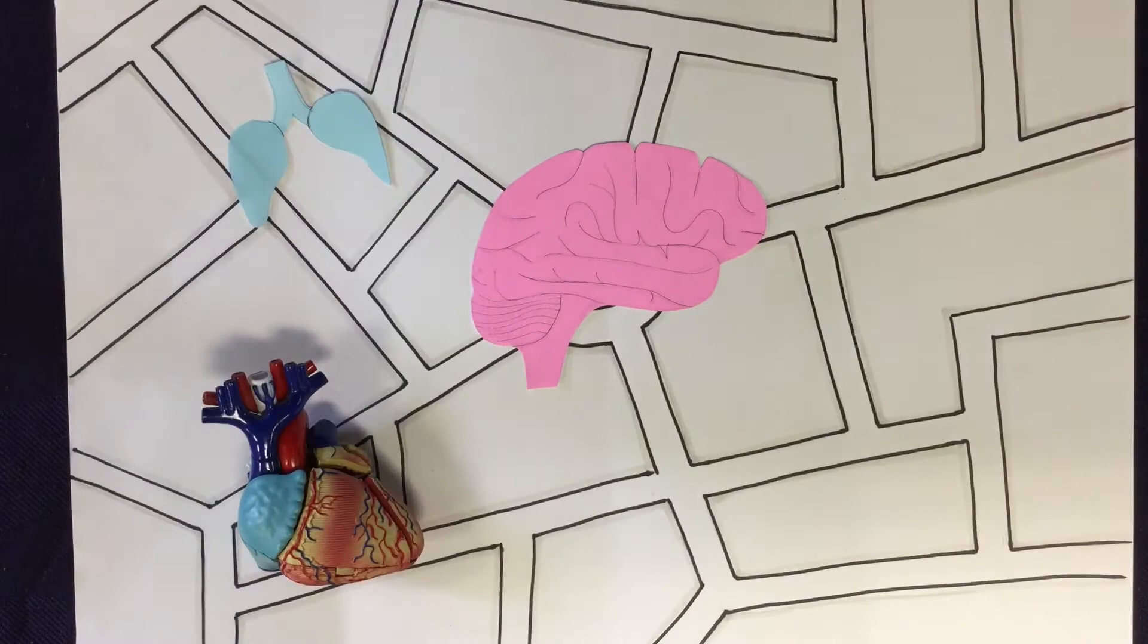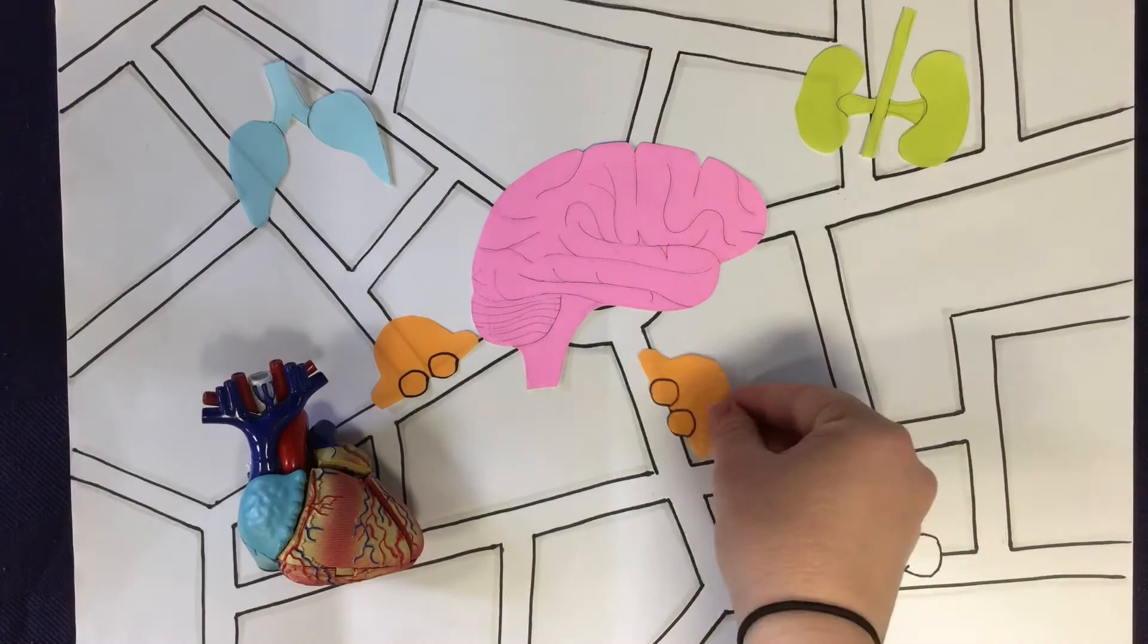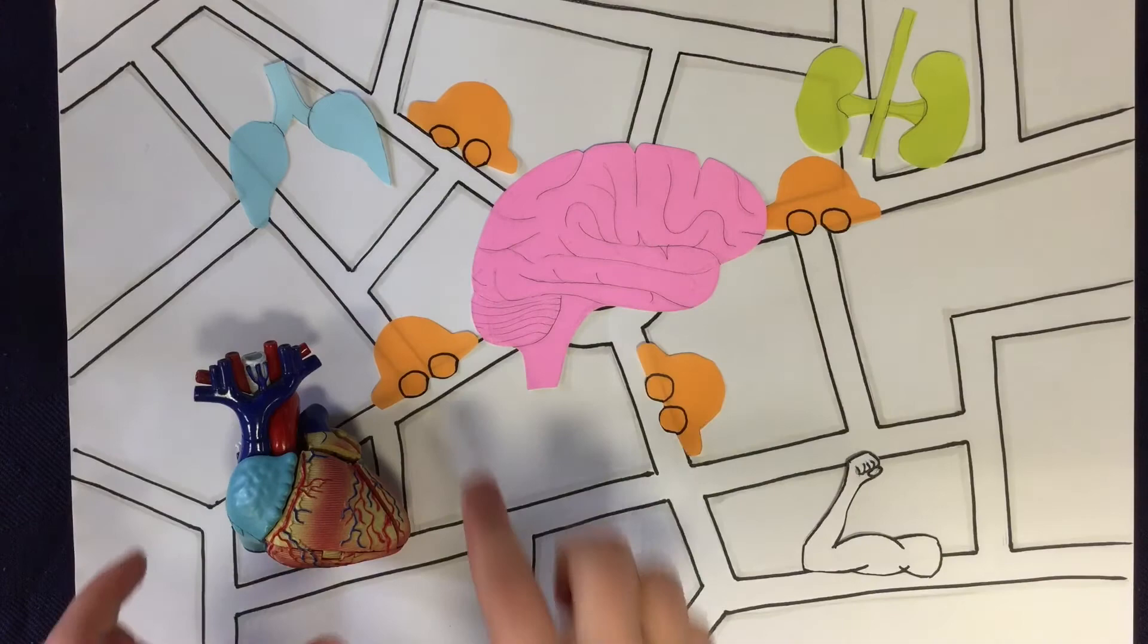Here the cars represent the pieces of information sent along the nerves known as action potentials. The more action potentials sent, the faster the heart beats.